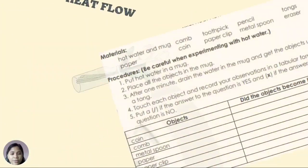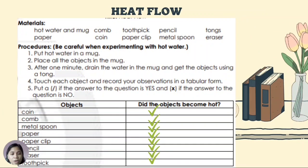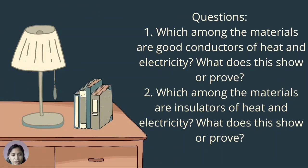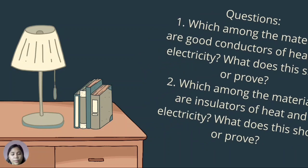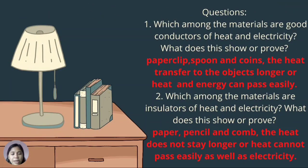These are the correct answers. All the objects became hot. Which among the materials are good conductors of heat and electricity, and what does this show or prove? Number two: which among the materials are insulators of heat and electricity? For number one: paper clips, spoon, and coins — heat transfers to the object readily, meaning heat and energy can pass easily. For number two: paper, pencil, and comb — heat does not stay longer, or heat cannot pass easily, and neither can electricity.